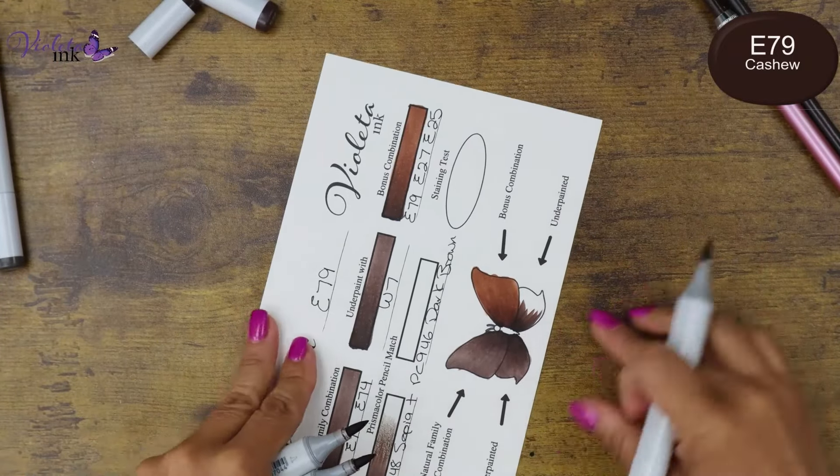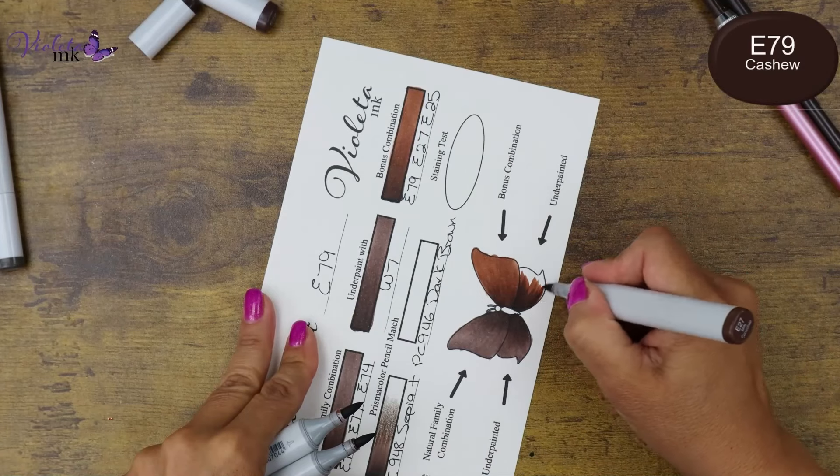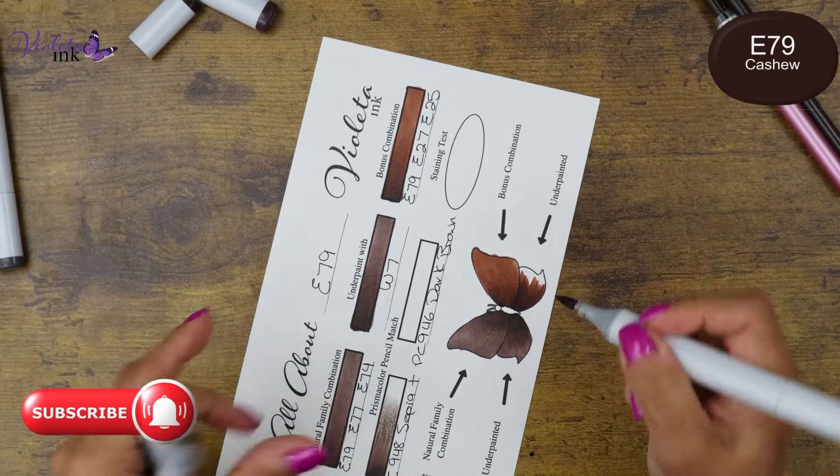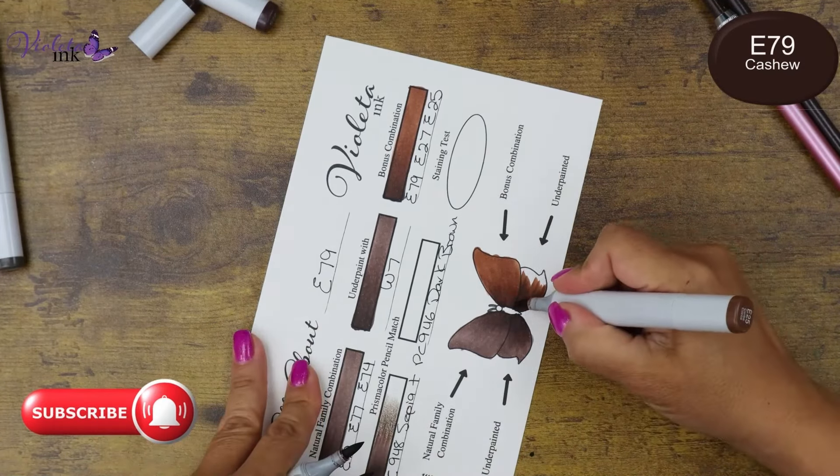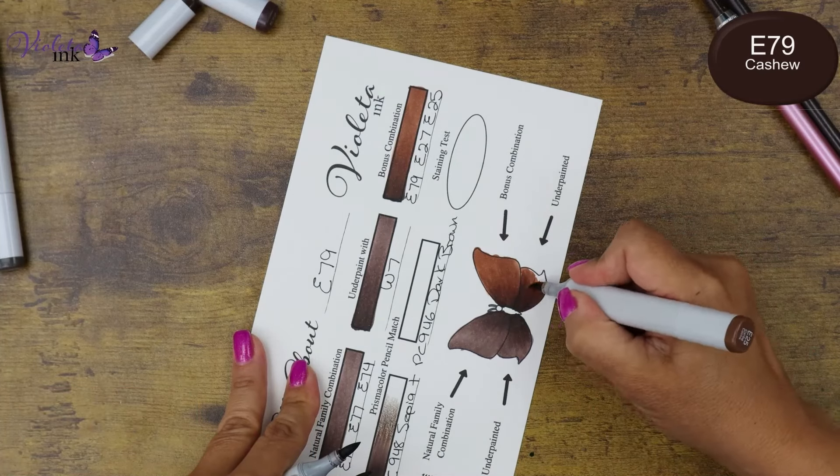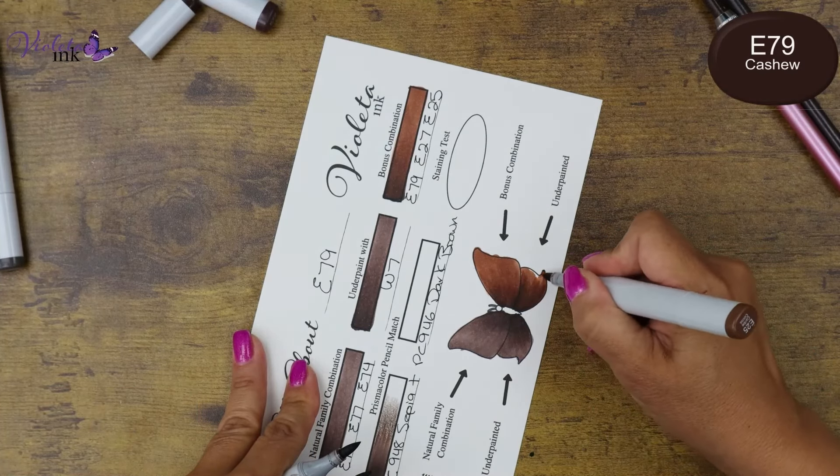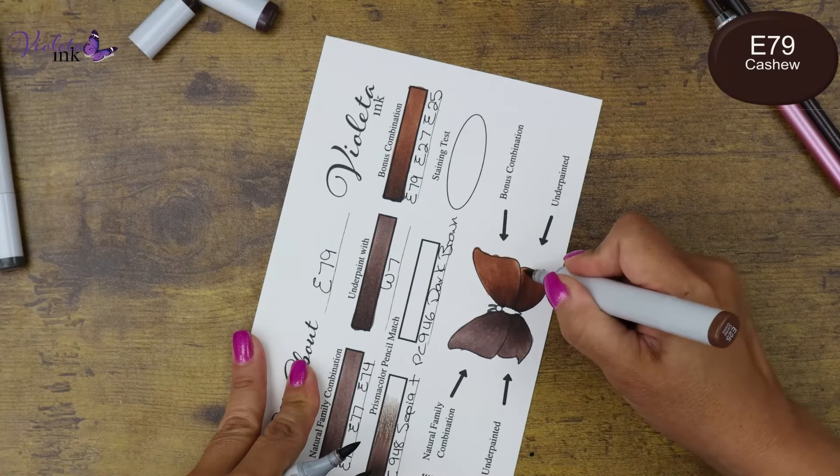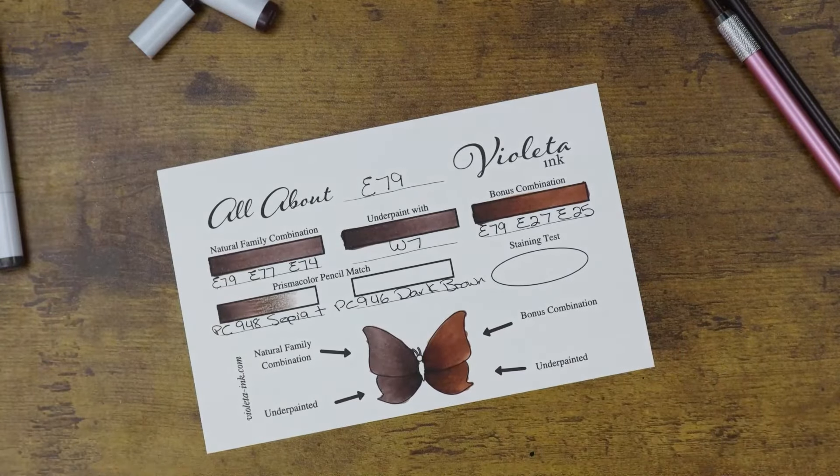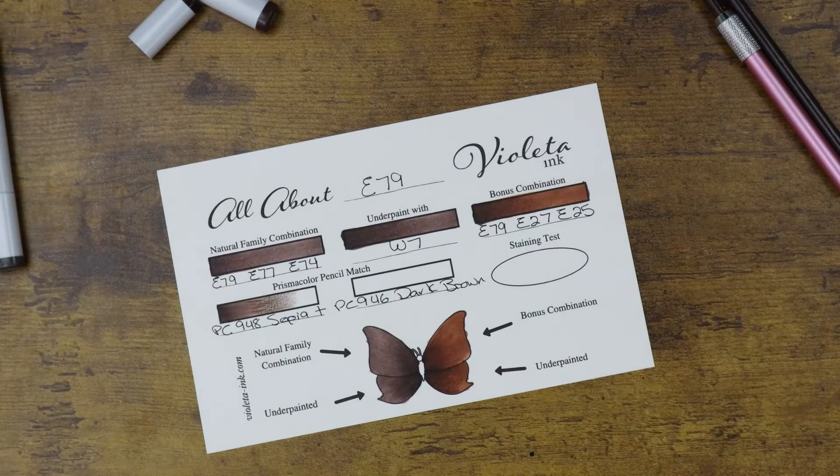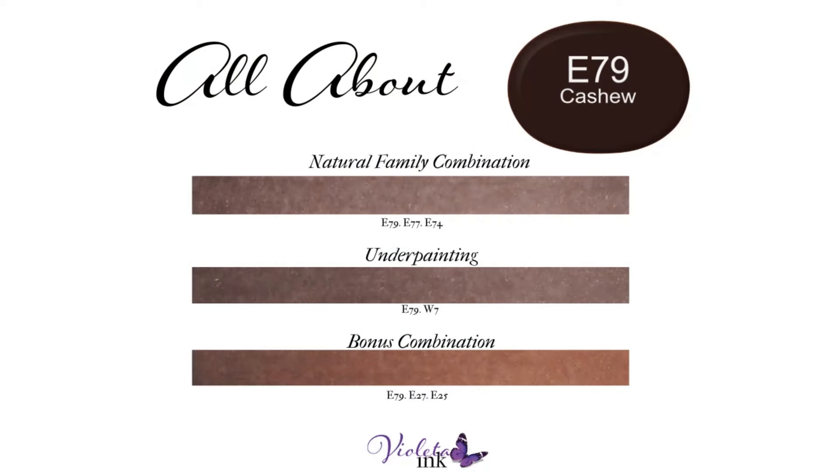E79, E27 and E25 on top of W7. So this is what we're all about for E79. Natural family combination is E79, E77 and E74. We are underpainting with W7.